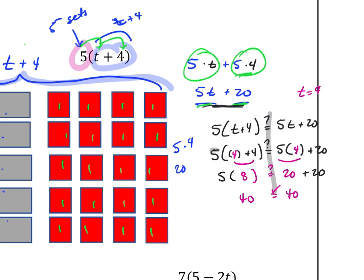I checked it using t equals 4, since I figured you wouldn't use that one. I plugged four in for t, added the fours and got eight, then five times eight is 40 — that's from the original. On the simplified side, five times four is 20, plus 20, equals 40. Both sides give 40, so these two are equivalent expressions.